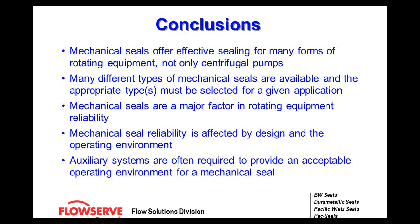Mechanical seals are a major factor in rotating equipment reliability — the mechanical seal is like the weak link in the system. If you have seal failures, there is generally something causing them: operational, mechanical, or design issues. As I was told when I first got into the mechanical seal world, they don't like to commit suicide. If you identify a mechanical seal failure and understand what's causing it, you can backtrack and find other problems in the system that would eventually cause bearing failures or impeller wear.